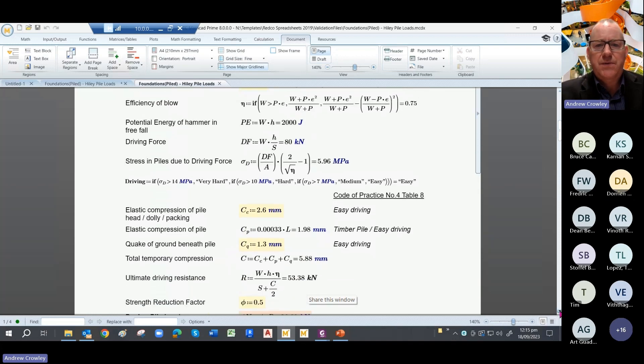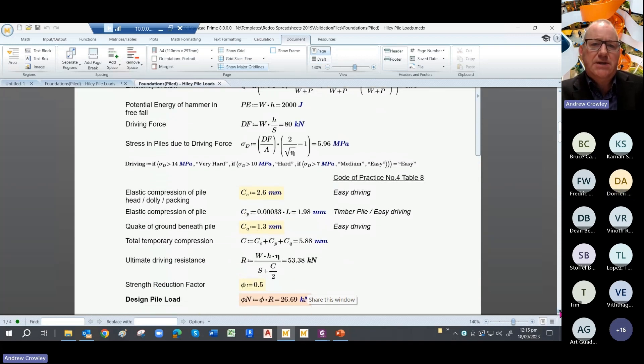And then we carry on. So you're turning that potential energy of the hammer into a driving force, and from that you get the stress in the pile due to the driving force. Now why do we need that? Well, we need that to find out how strong or how difficult the driving is. So generally if you're below the 7 MPa mark, you're looking at easy driving. And if you're above the 14 MPa mark, you're looking at very hard driving, and that makes a difference in the C values.